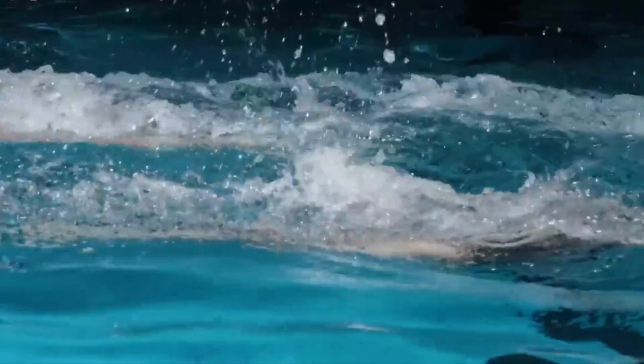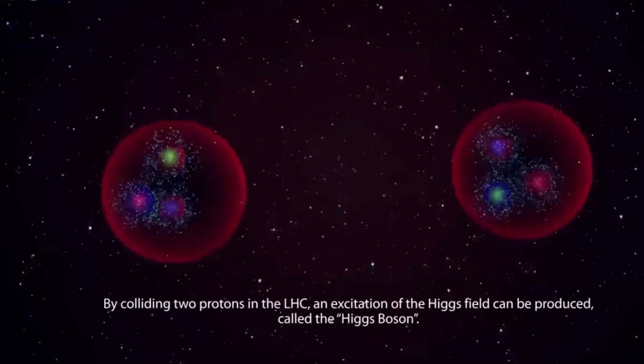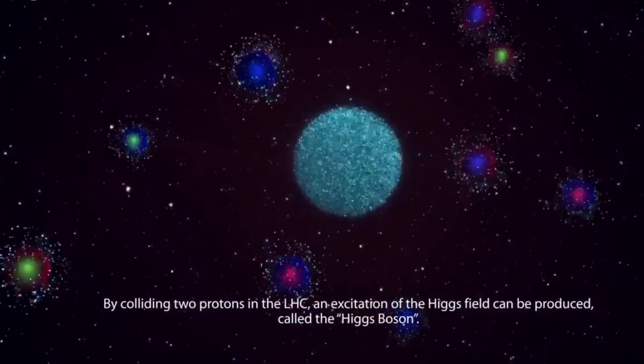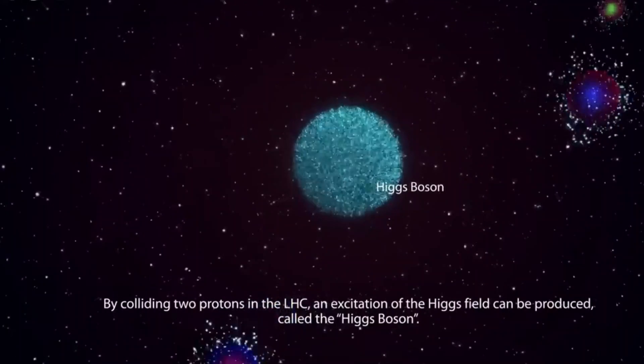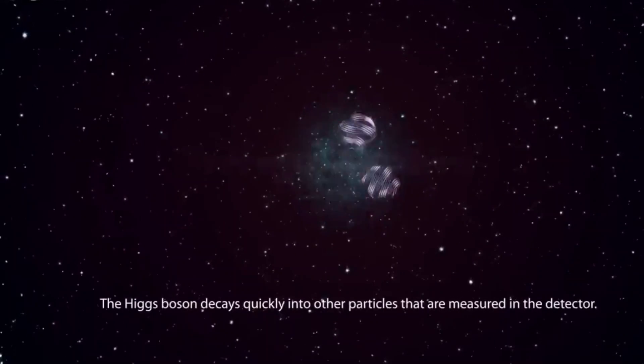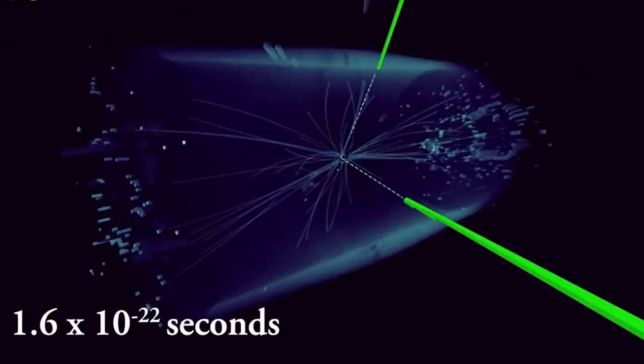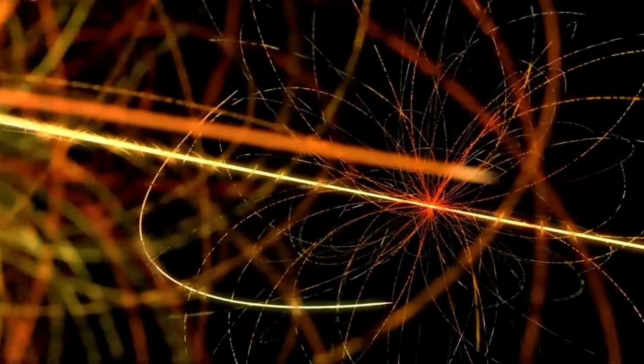Alright, cosmic detectives, time to uncover the secrets. Since the Higgs boson is here only for the briefest moment, it's like it leaves behind a cosmic treasure trail. But instead of X marking the spot, it's all about its curious decay modes. It's like cosmic lucky draw time. The Higgs boson spins its cosmic roulette wheel, and depending on its mood, it decays into different particles, sometimes two photons, other times a photon and a Z boson. Oh, the universe loves to keep us on our toes.